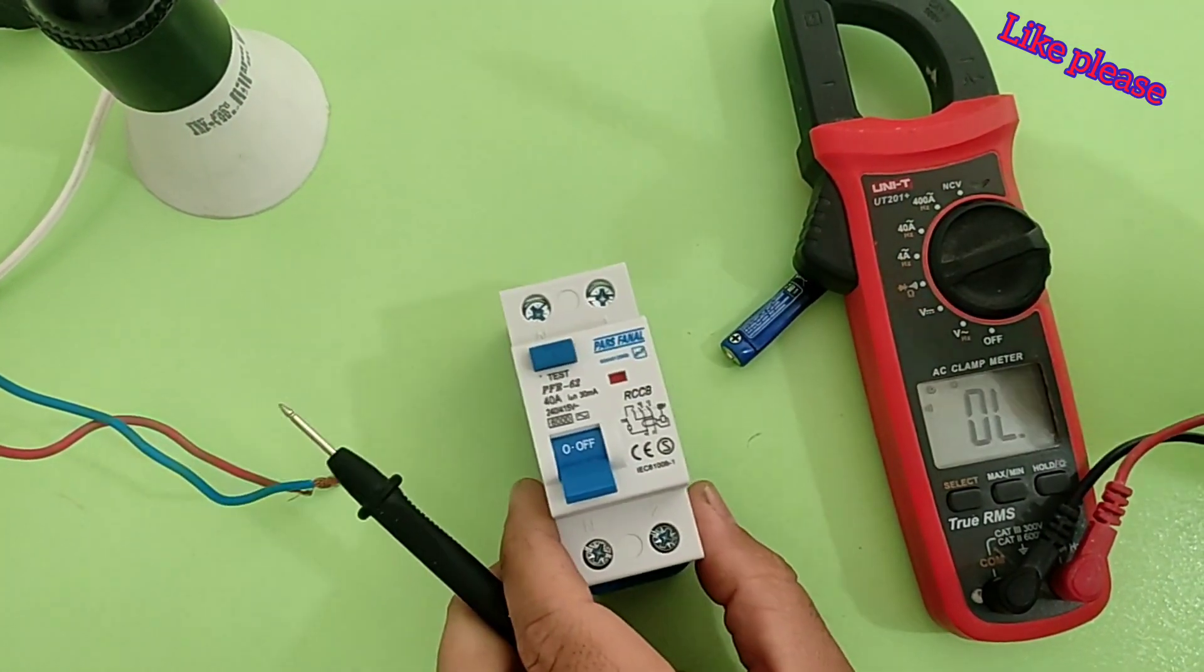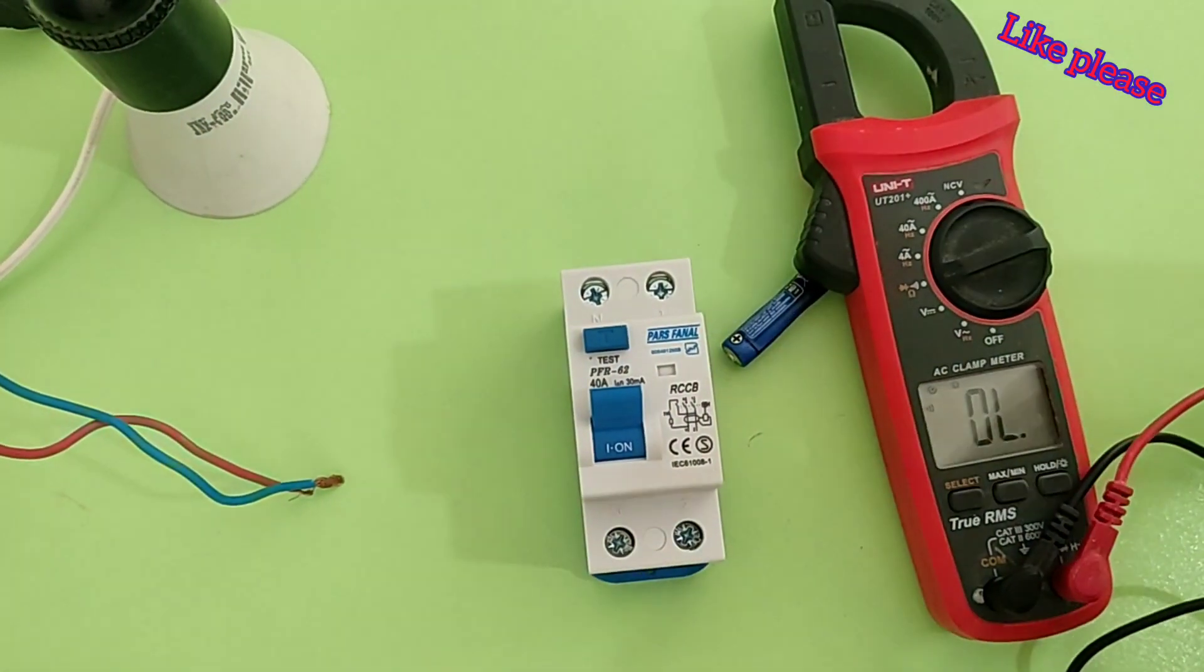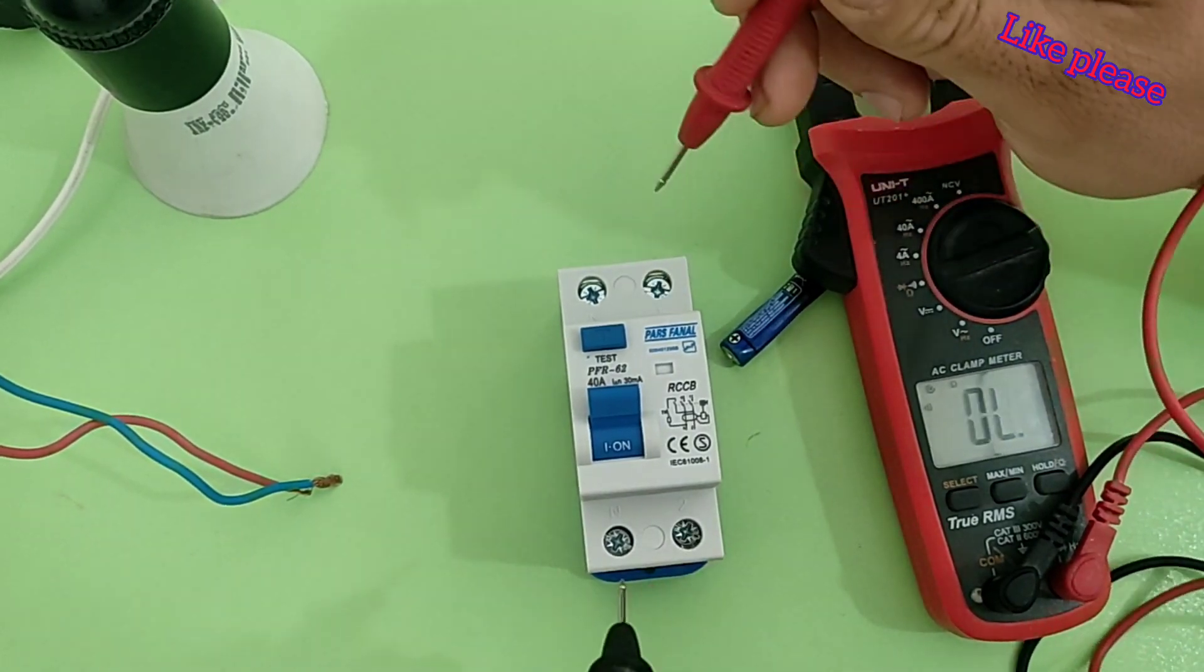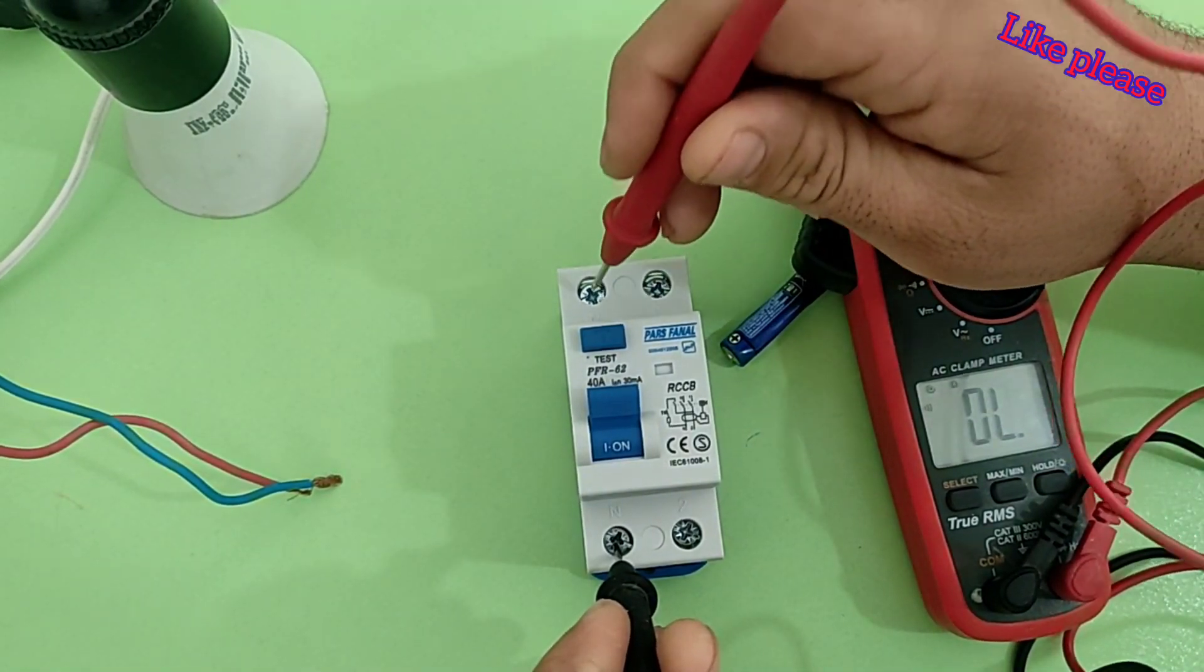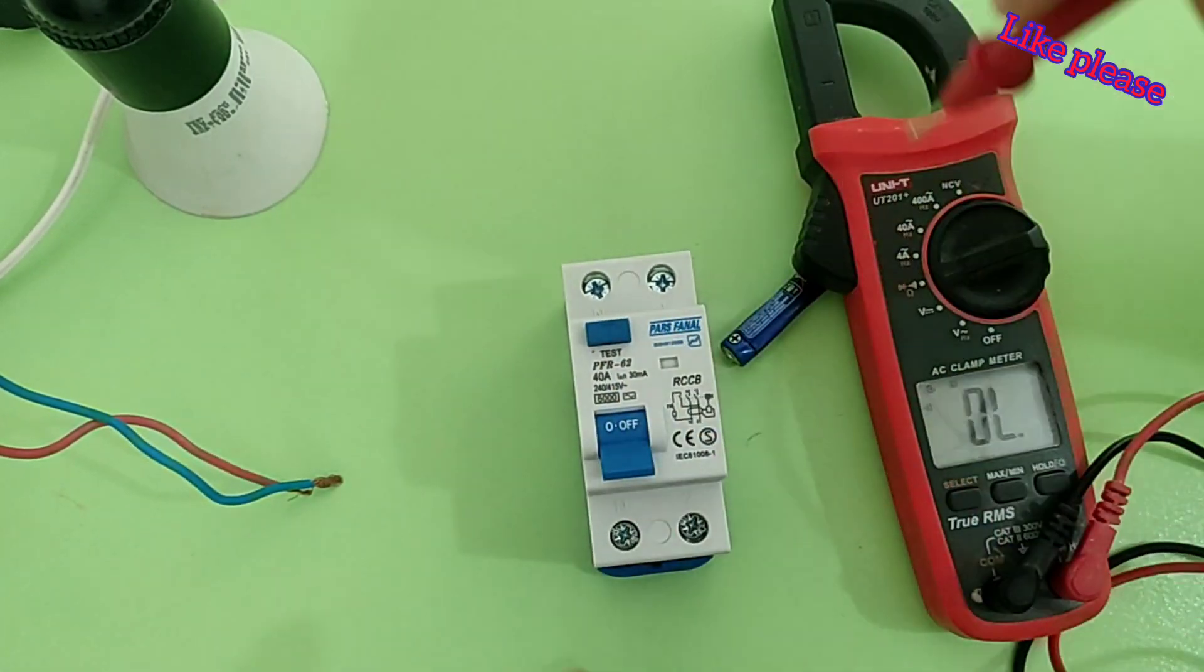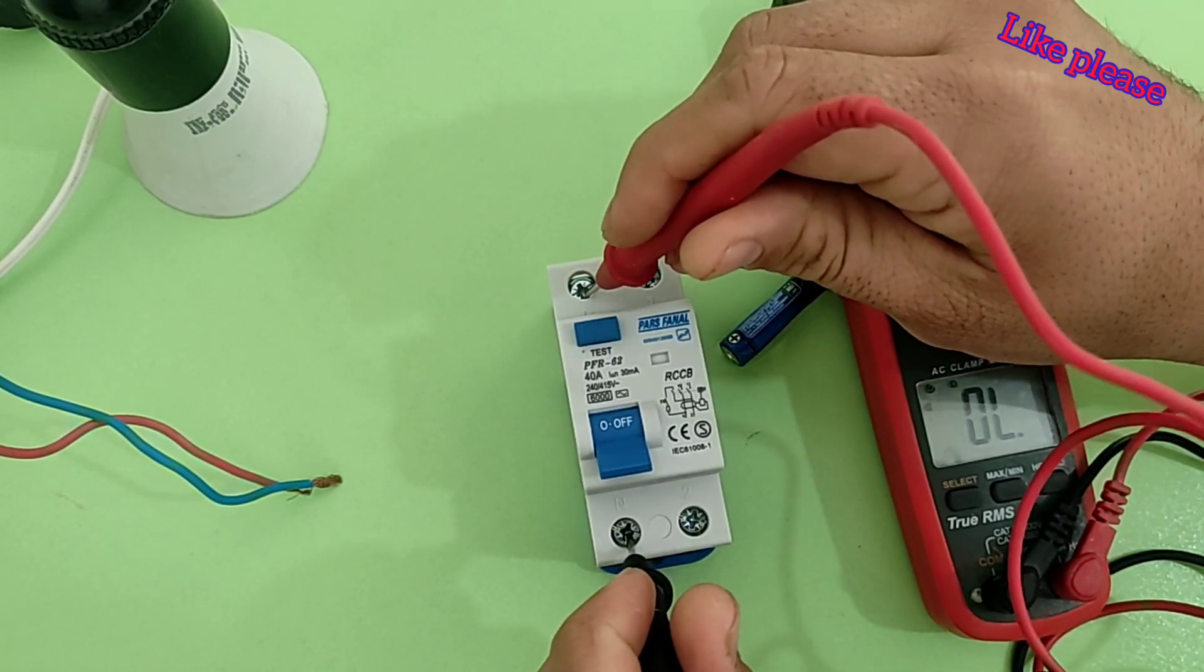To test the blades, we connect the switch and connect the probes to input and output of the blades. If the blades are healthy, the device beeps. It doesn't beep when the switch is off.